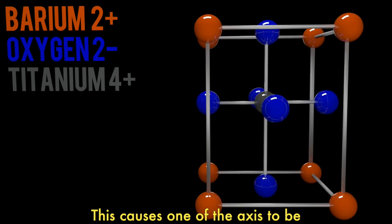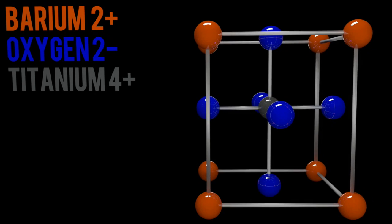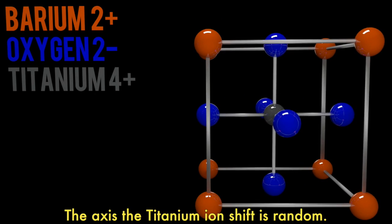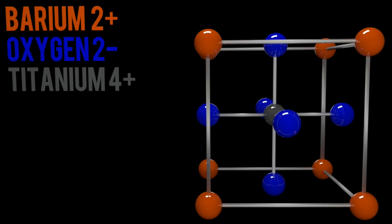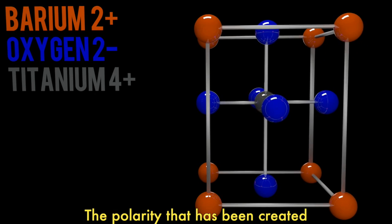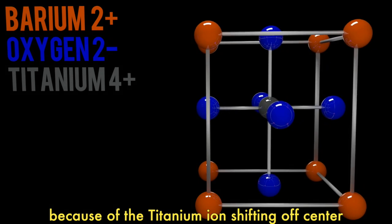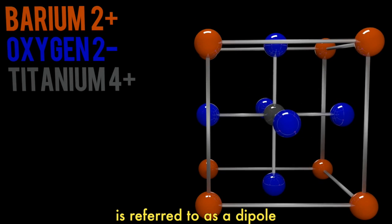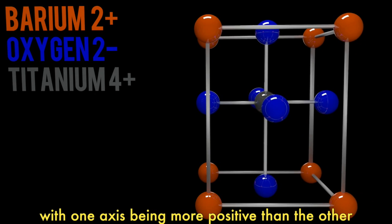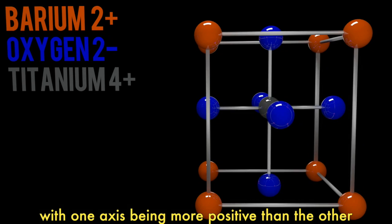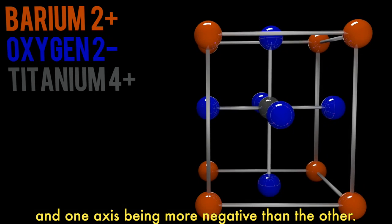This causes one of the axes to be more positive than the other. The axis that the titanium ion shifts is random. The polarity that has been created because the titanium ion is shifting off center is referred to as a dipole, with one axis being more positive than the other and one axis being more negative than the other.